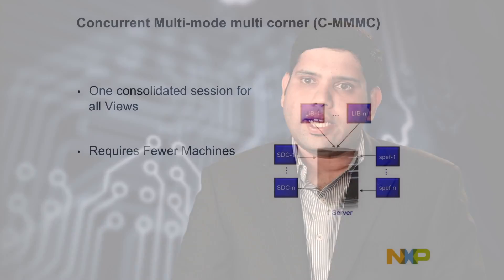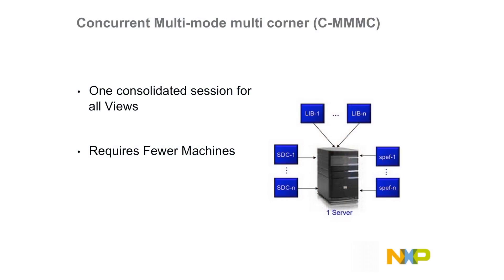The Cadence Concurrent and Distributed MMMC STF flow — MMMC being Concurrent Multi-Mode Multi-Corner — can be used when we have a block-level run since there is no impact on run times. Whereas in the Distributed MMMC, it can be used for the top level where you have hundreds of timing views for your sign-off, so that results are available quickly and it is easy for the engineer to consolidate all the reports in one go, making analysis easier.